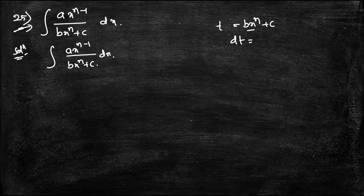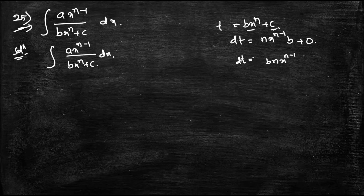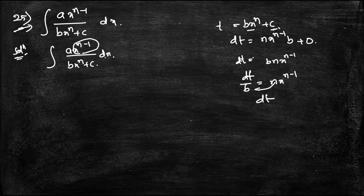Differentiating, dt = b·n·x^(n-1) dx, so x^(n-1) dx = dt/(b·n). Substituting, the integral becomes a · ∫(1/t) · dt/(bn), which simplifies to (a/bn)∫(1/t) dt.